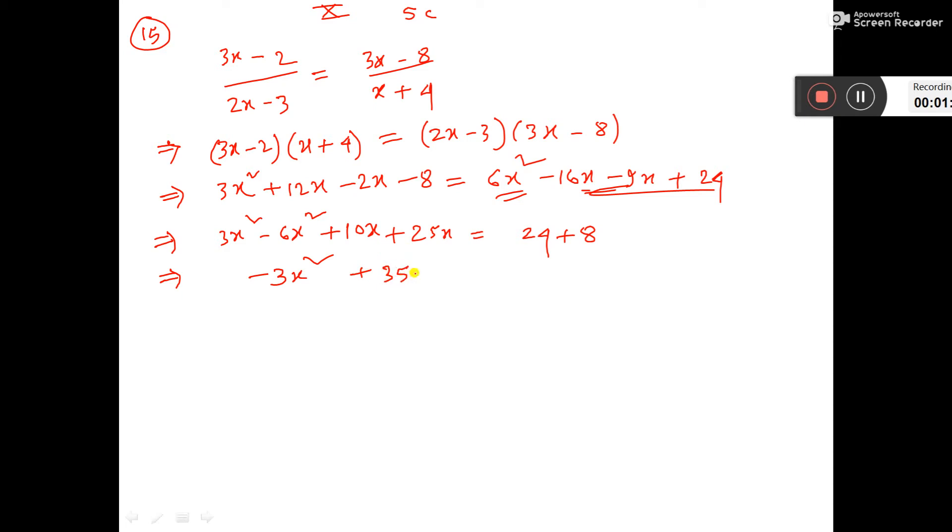3x squared plus 35x minus 32 equal to 0. Now, multiply by minus, then it is coming 3x squared minus 35x plus 32 equal to 0.